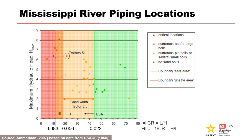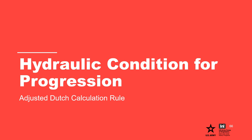Numerous sand boils were observed at creep ratios greater than 18 or average gradients less than 0.05 for levees along the Mississippi River in 1937, 1947, and 1950. Horizontal gradients as low as 0.02 were estimated, and failure nearly occurred at Trotter's location. A typical critical vertical or upward exit gradient in cohesionless soils is often thought to be around 1.0 for a specific gravity of 2.7 where heave is concerned, and higher for cohesive soils not subject to uplift. However, the magnitude of the horizontal gradient that has led to backward erosion piping is much lower.